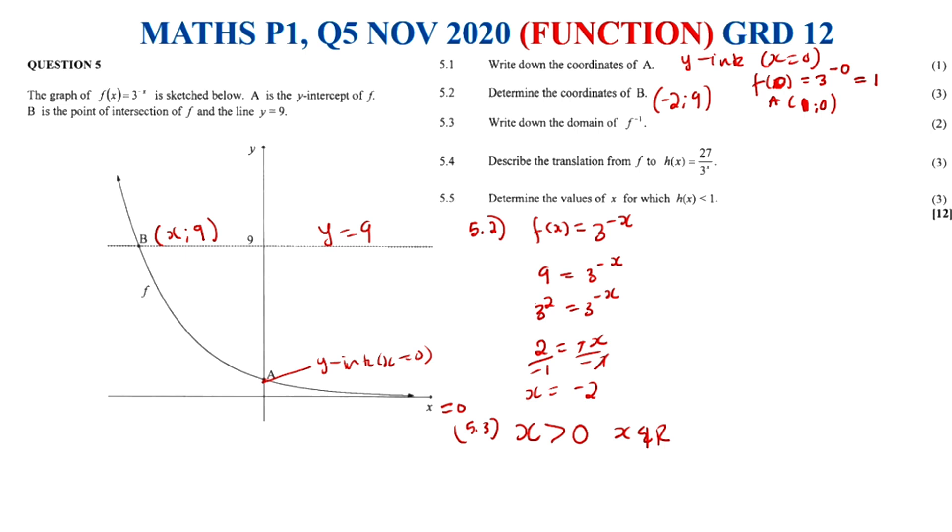Let's go ahead and have a look at 5.4. It says describe the translation from f to h. Let's have a look at this h here. It says h(x) equals 27 over 3 to the power of x. So this one we need to simplify it so that we can be able to see what happened for it to move from 3 to the power of negative x to where it is now. So therefore we can say 27 can be written as 3 to the power of 3.